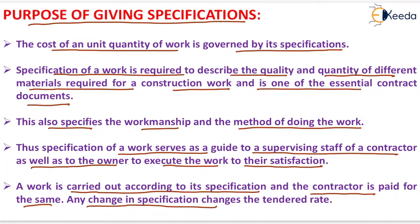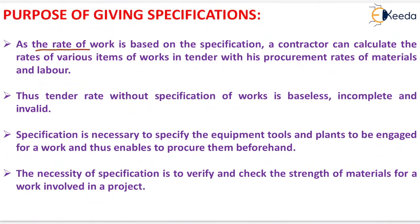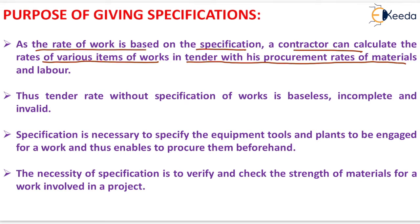Any change in specification changes the tendered rate. As the rate of work is based on the specification, a contractor can calculate the rates of various items of work in tender with its procurement rates of material and labor. Thus, tender rate without specification of work is baseless, incomplete and invalid.